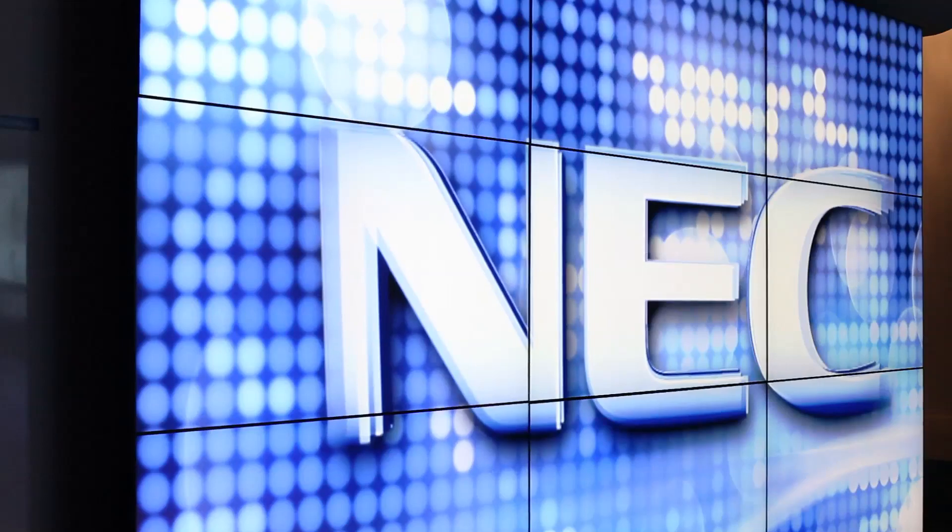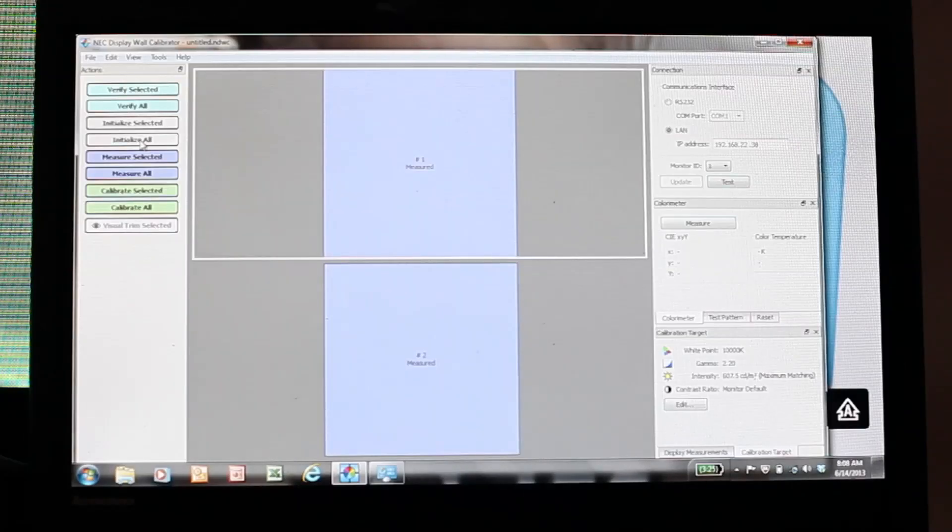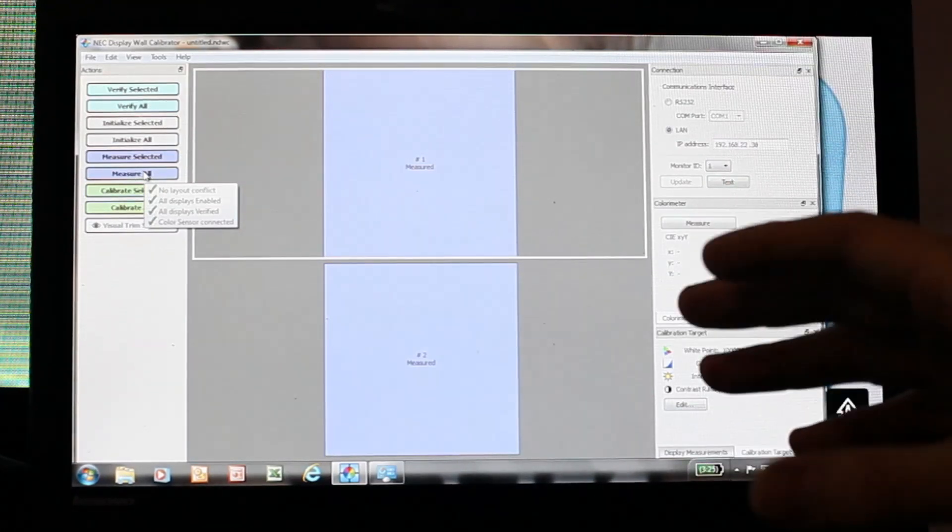The next step is to measure all the displays. When this step is being done, each screen is going to be given a set of test patterns that are generated through our DisplayWall Calibrator software itself. So no external sources are necessary when utilizing this.